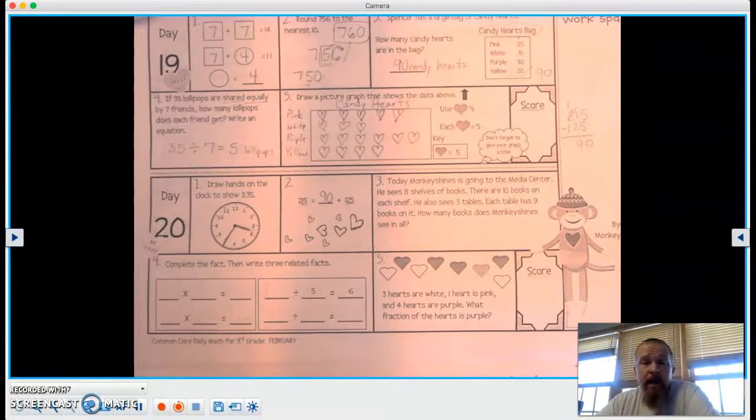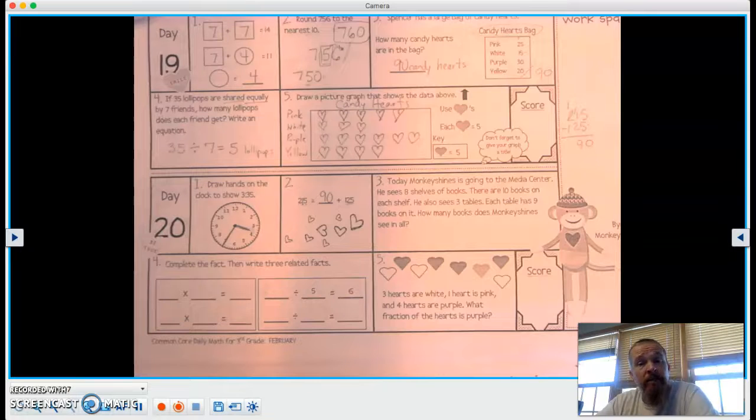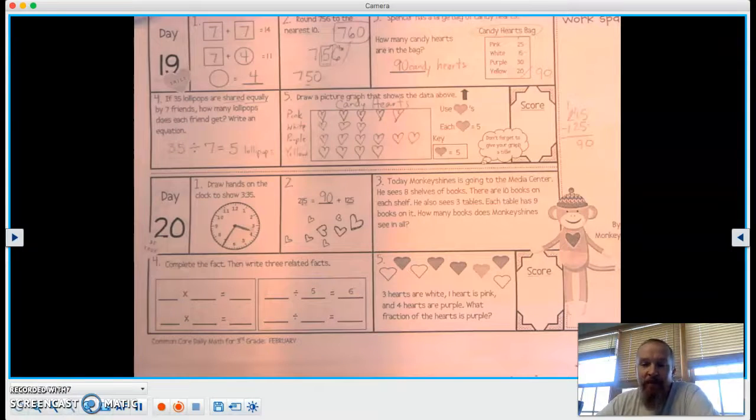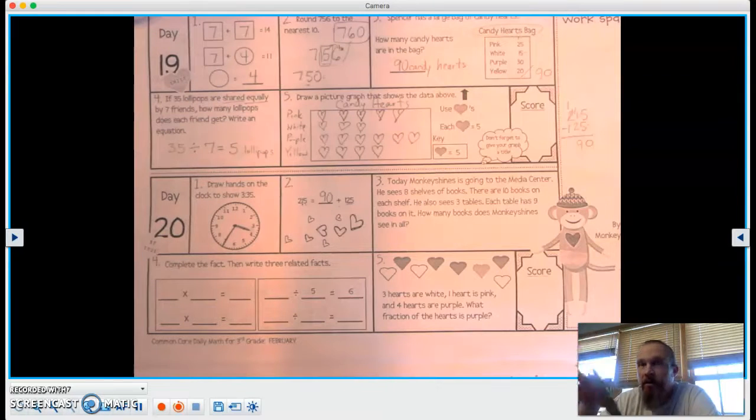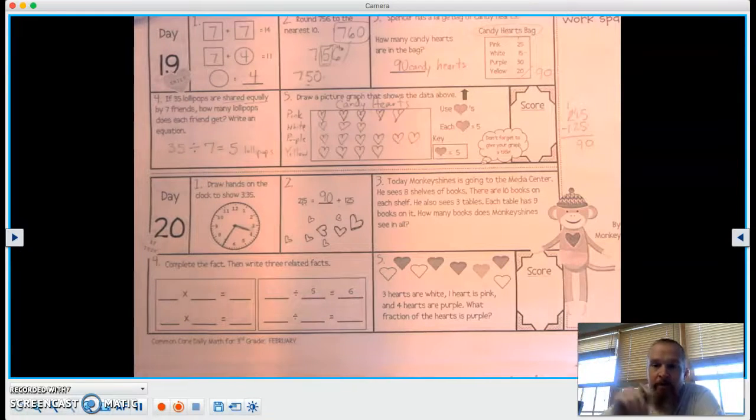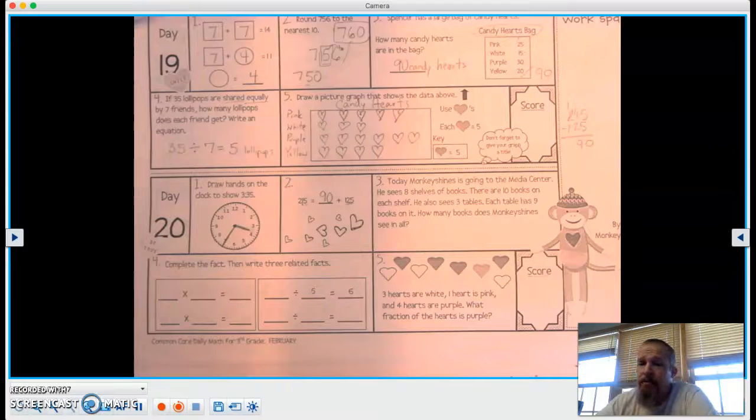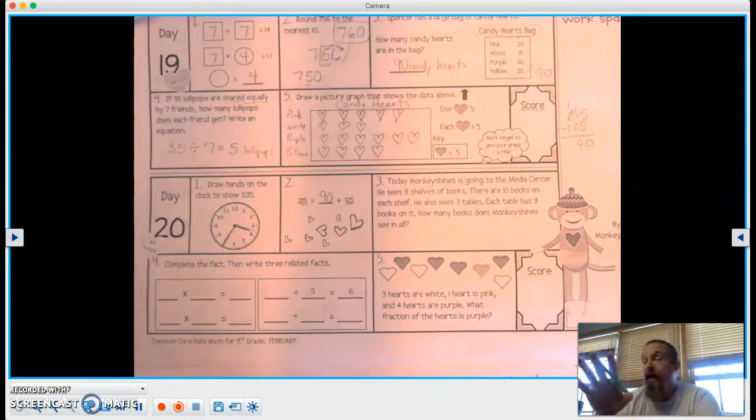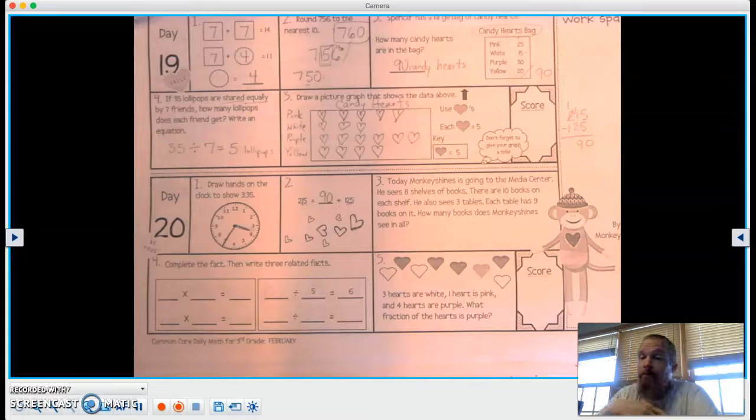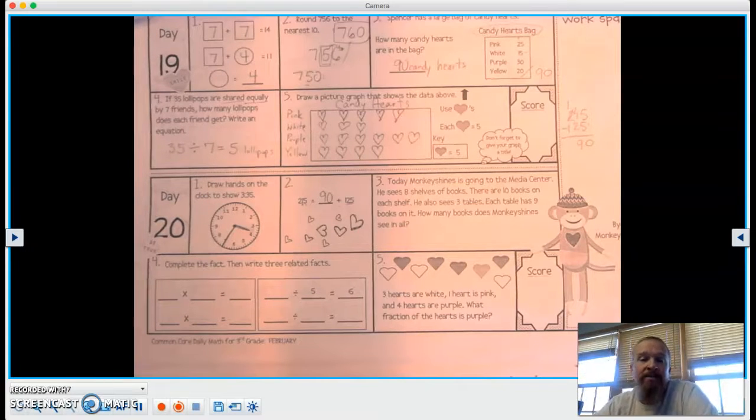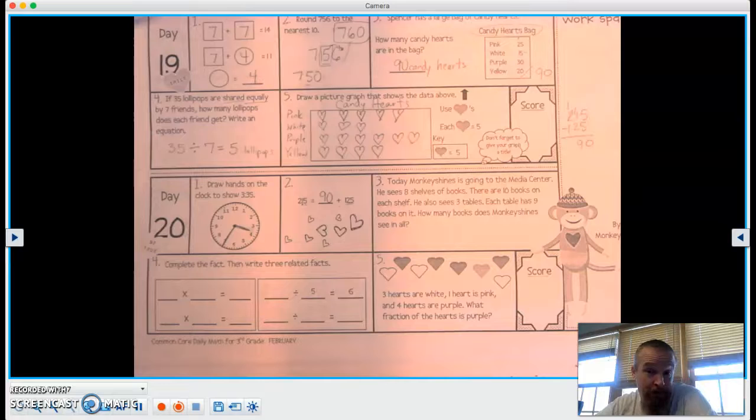Number three, today, Monkey Shines is going to the media center. He sees 8 shelves of books. There are 10 books on each shelf. Right away, I know you're already thinking 8 times 10 is 80, but wait. He also sees 3 tables. Each table has 9 books on it. I know right now you're already thinking 3 times 9 is 27. How many books does Monkey Shines see in all? I think you're right.